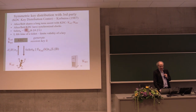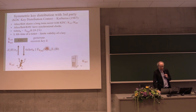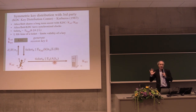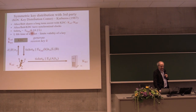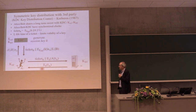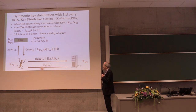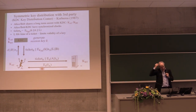Bob gets the ticket, encrypted under his key, containing the session key and stating he shares it with Alice, valid for the rest of the day. Alice decrypts her part, then sends the ticket to Bob together with her name and a timestamp encrypted under the session key — Kerberos assumes timestamps. Bob decrypts the ticket, gets session key K, checks it's shared with Alice, checks the lifetime, then decrypts Alice's authenticator to verify her presence and the timestamp. Bob confirms he has the key by answering Alice. This is how Kerberos works in detail.